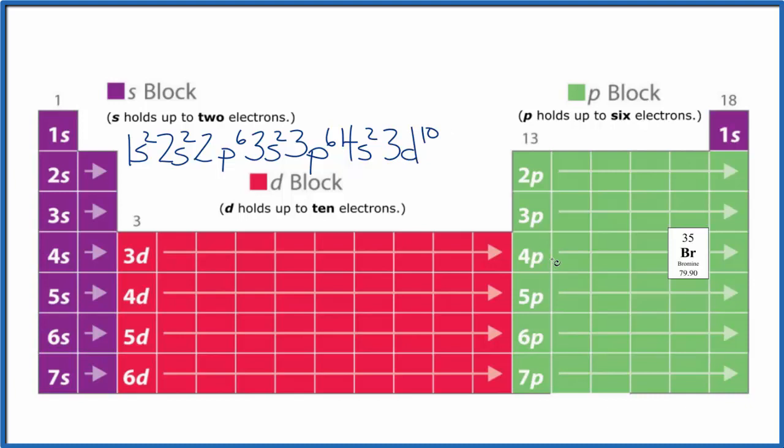And we go to the 4p: 1, 2, 3, 4, 5, and there's bromine. So 4p5. If you count these numbers up, they'll add up to 35.